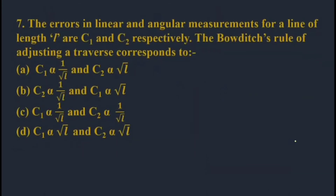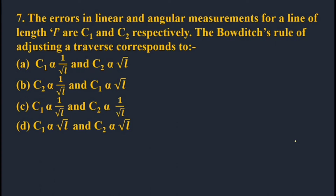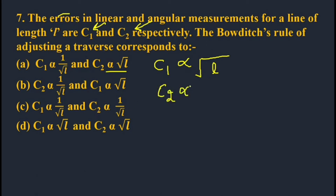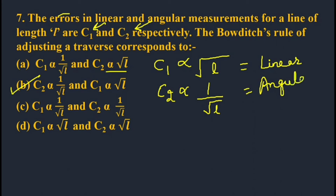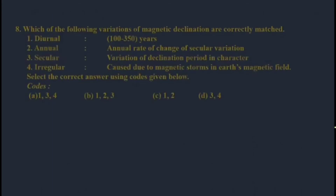Question seven: Errors in linear and angular measurements. Linear errors C1 are directly proportional to √L (root of length), while angular errors C2 are inversely proportional to √L. Option B is the correct option.